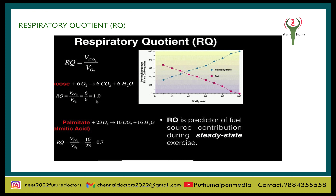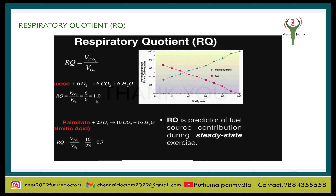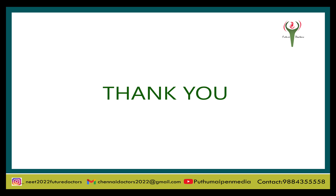For example, if tripalmitin (a fatty acid) is used as a substrate: 2(C₅₁H₉₈O₆) requires 145 O₂ and releases 102 CO₂ and 98 H₂O. So RQ = 102/145 = 0.7. For protein as the respiratory substrate, the RQ is variable, ranging from 0.5 to 0.9 depending upon the oxygen content of the substrate.